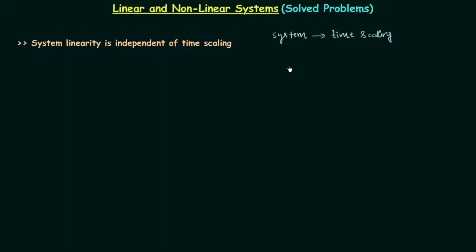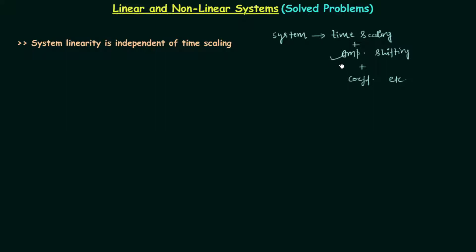A system can definitely perform multiple operations, for example time scaling plus amplitude shifting, plus some coefficient multiplied to the input. So the system can perform multiple operations, but at this point we know about time scaling. If the system is only performing time scaling then it is linear, and if we have knowledge of other operations like amplitude shifting or coefficient multiplied to the input, then we can comment about the overall nature of the system.